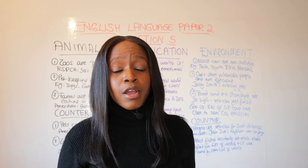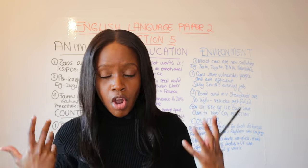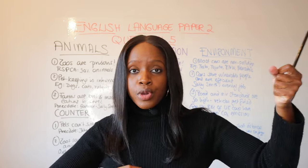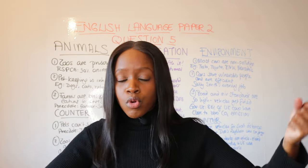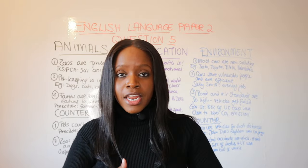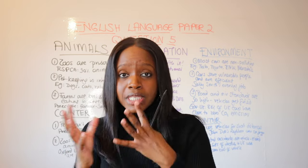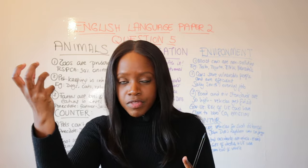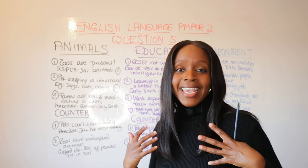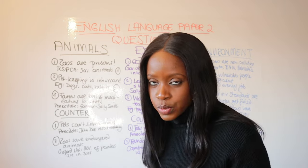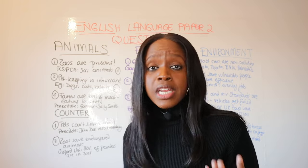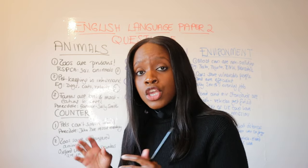Part of your feedback was to do with language paper two, question number five. This is where you're asked about a topical issue, asked to show your opinion and to debate whatever topical issue — be it social media, animal cruelty, whatever. Lots of you suggested it would be really useful to have an idea of what you could write about if one of these topics came up.